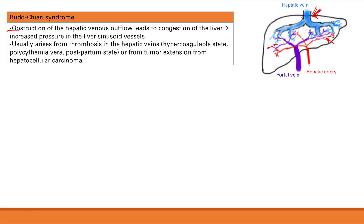This obstruction of hepatic venous outflow can arise from several factors. One is thrombosis in the hepatic veins, which can arise from a hypercoagulable state, polycythemia vera — having too many red blood cells — or being in a postpartum state. The other cause is tumor extension from hepatocellular carcinoma, which spreads hematogenously. All of these can cause a blood clot or tumor obstruction, leading to increased pressure in the liver.